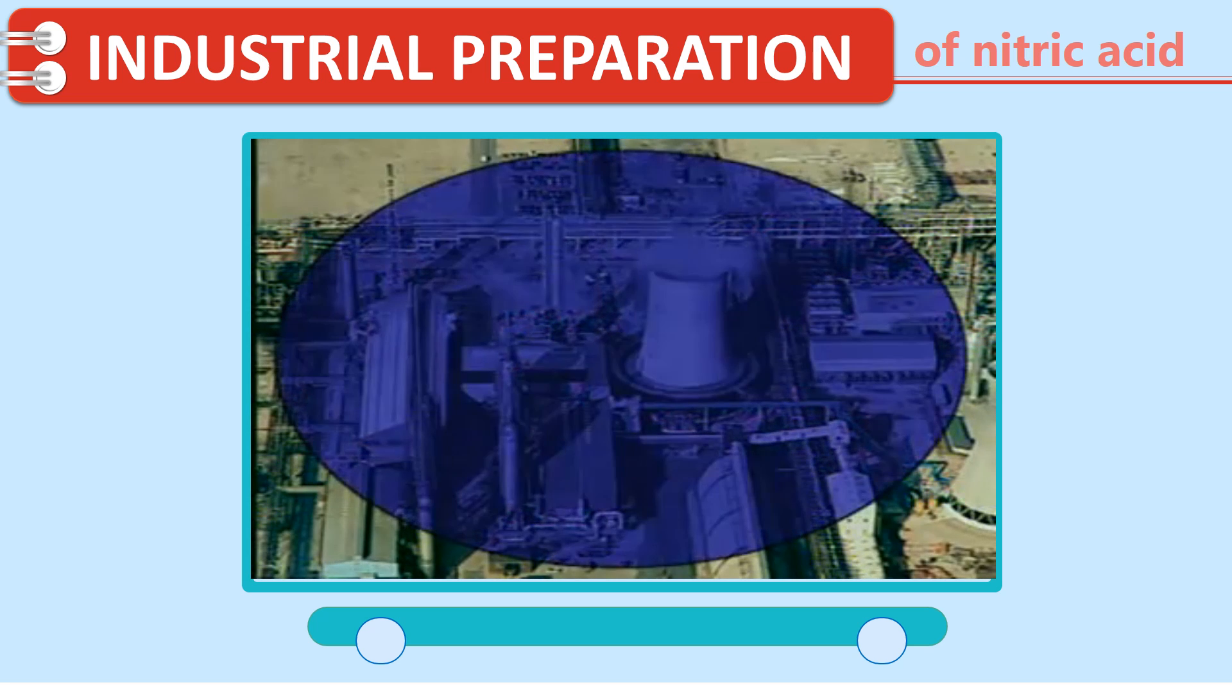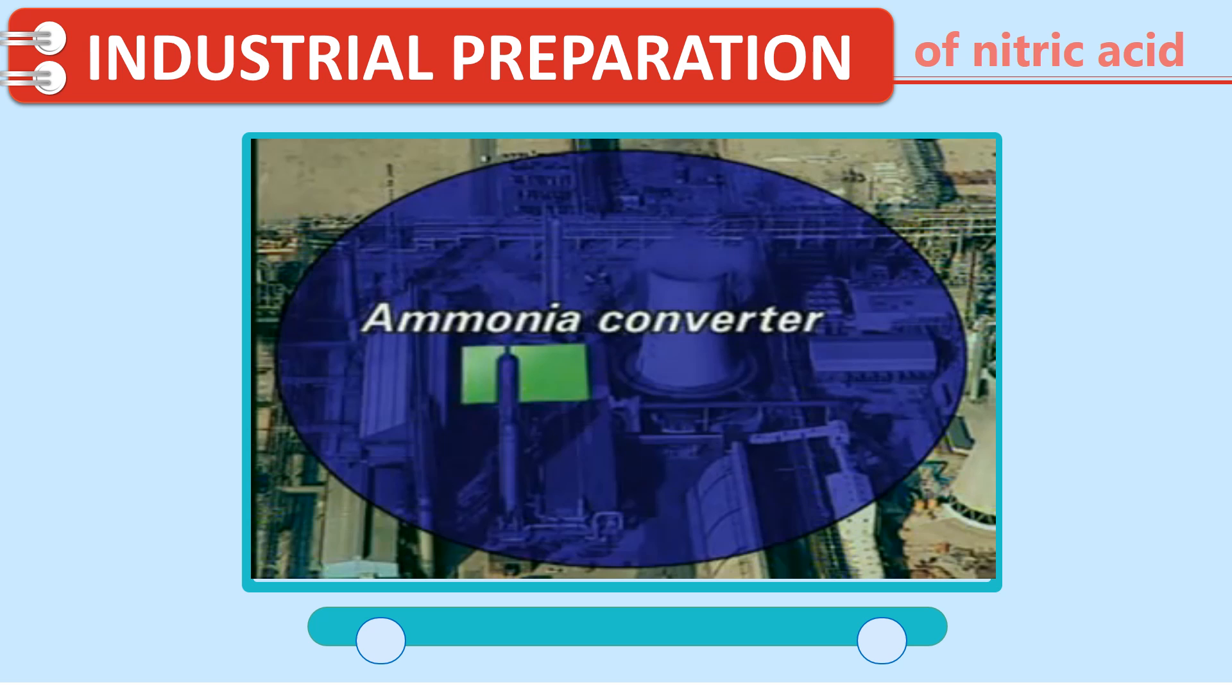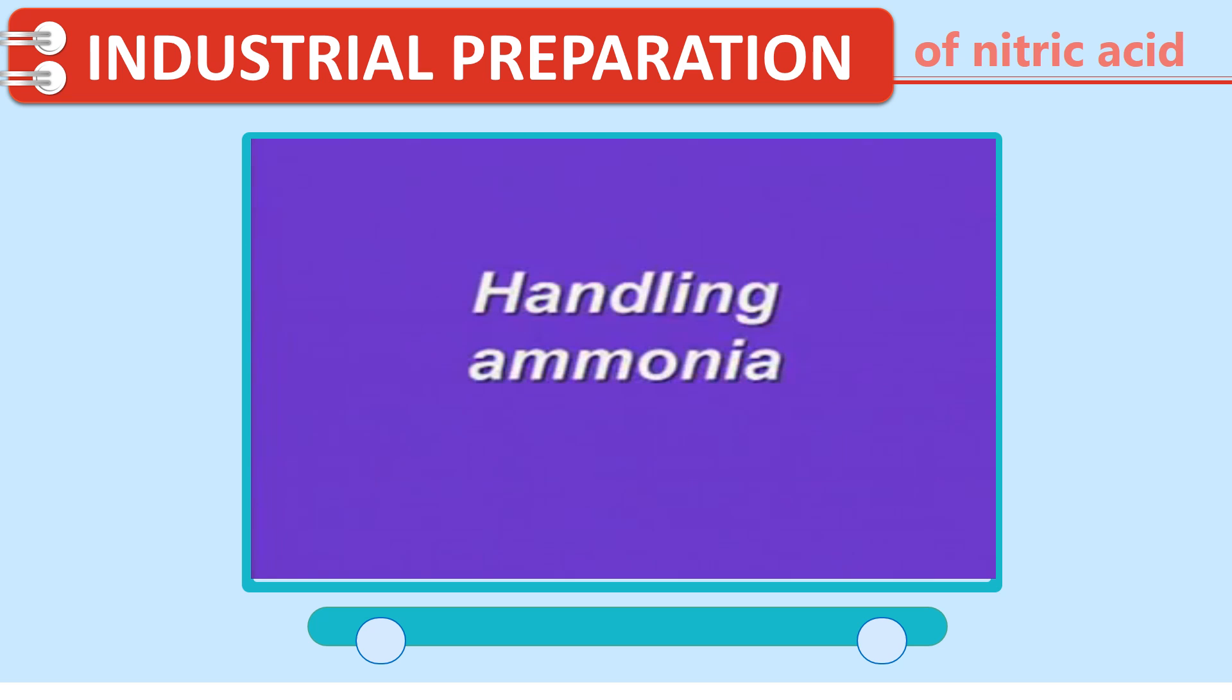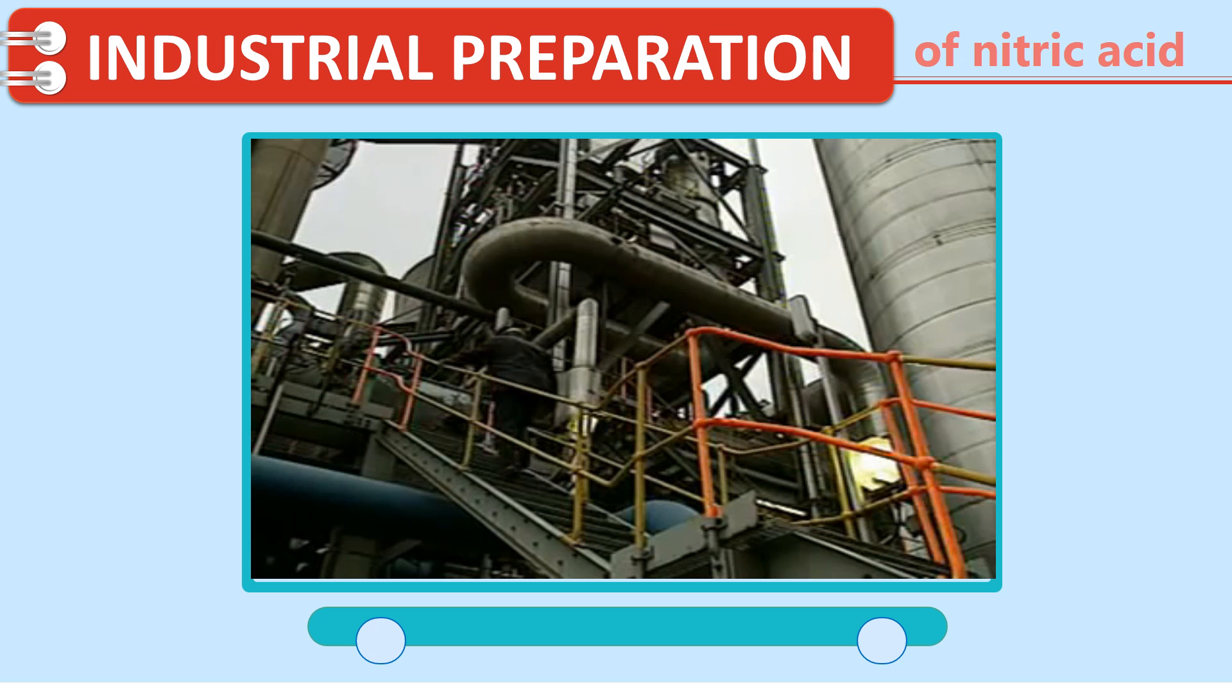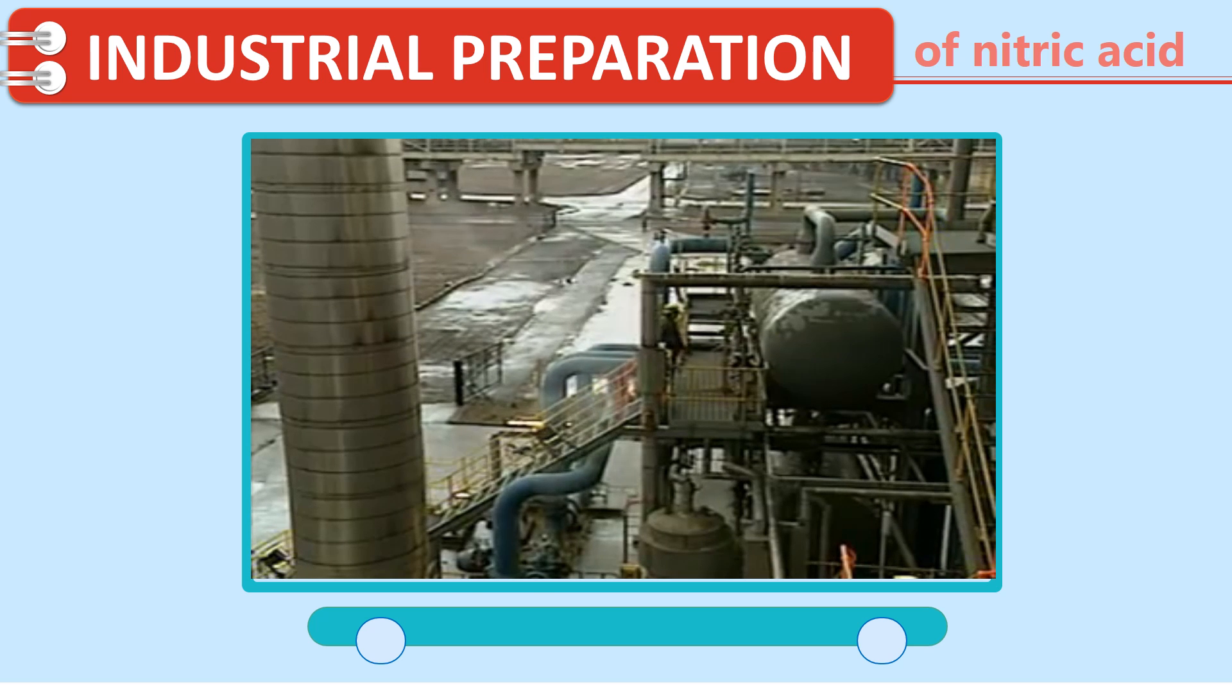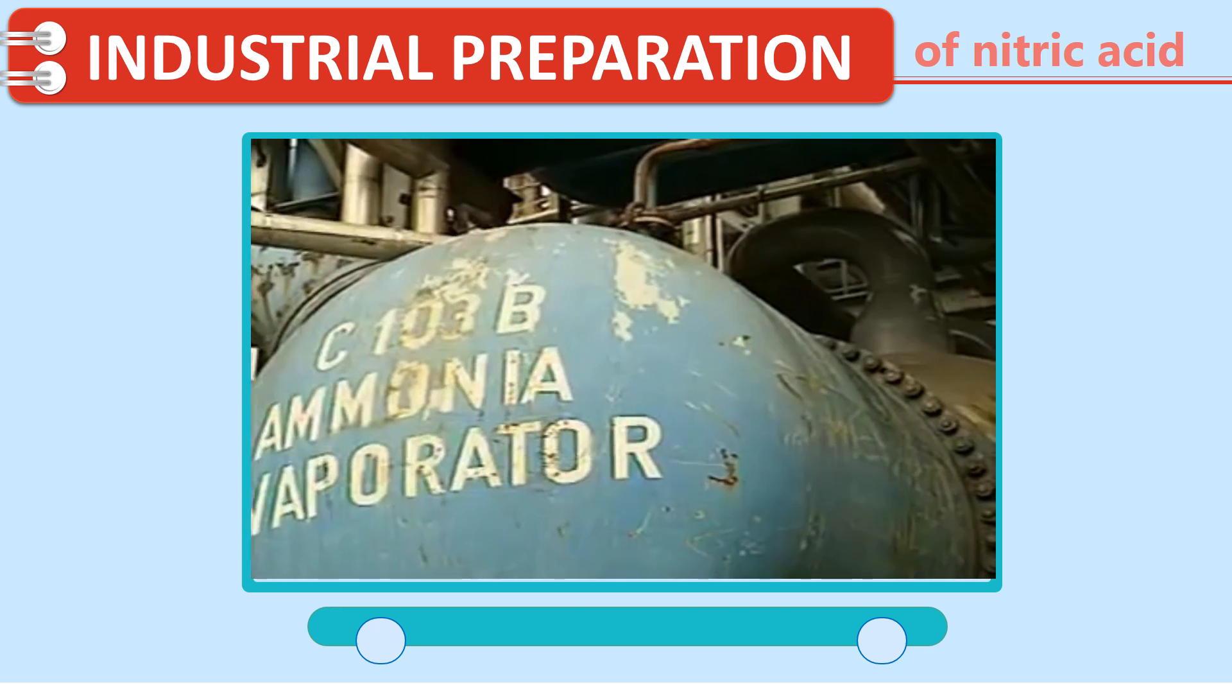In this plant, liquid ammonia is fed to the evaporator here. Ammonia is mixed with air here and passes to the converter. This is the absorber. Liquid ammonia is fed directly from the ammonia plant which is close by on the same site. It is evaporated in this vessel using heat from the hot water produced later in the process.